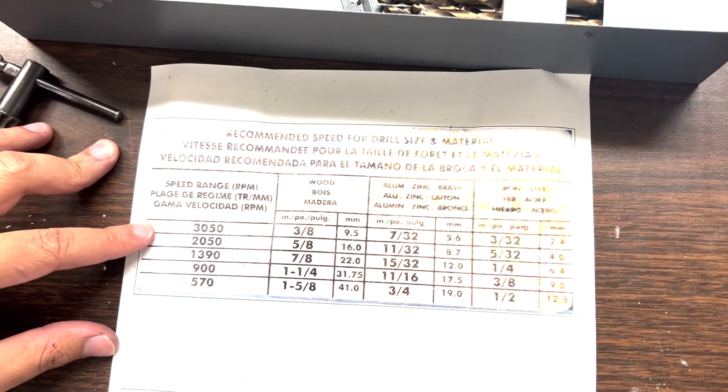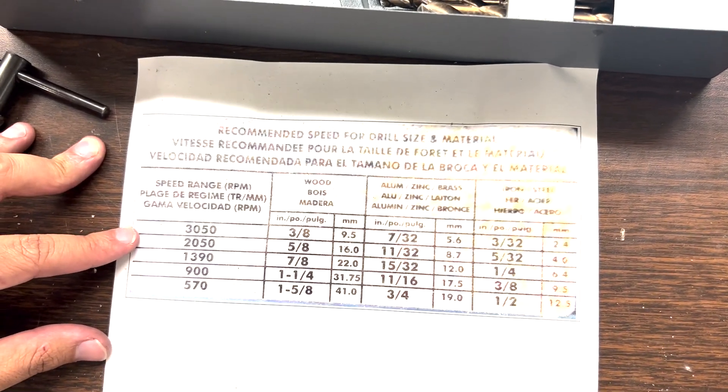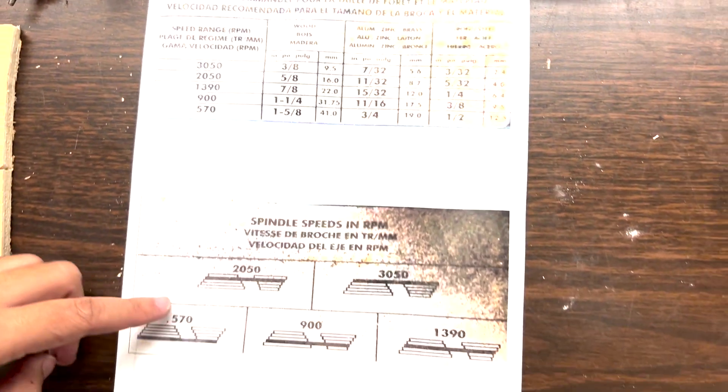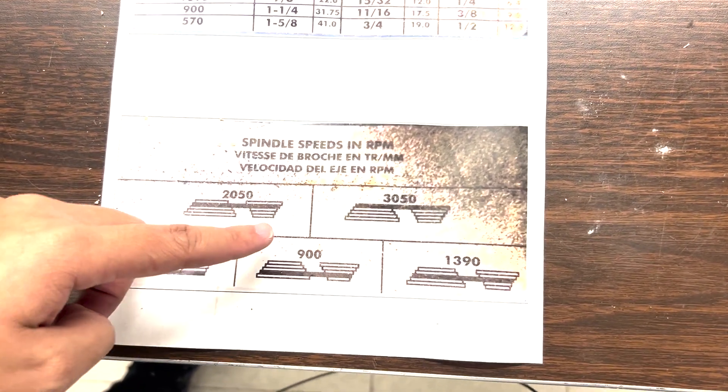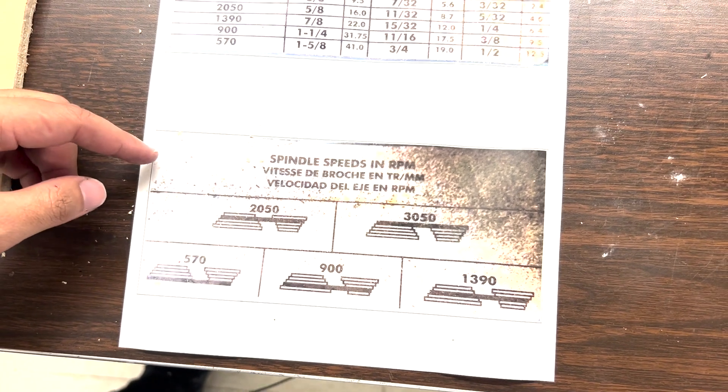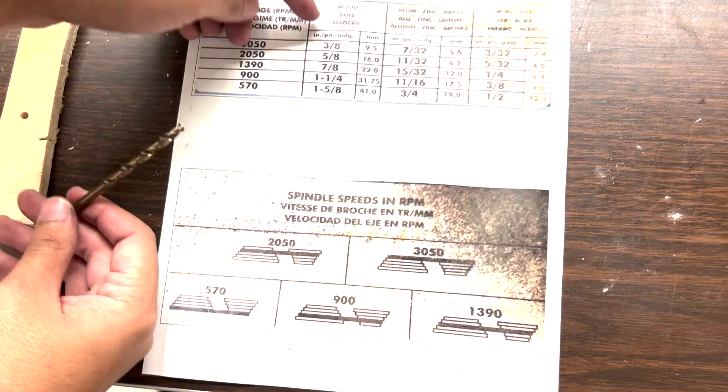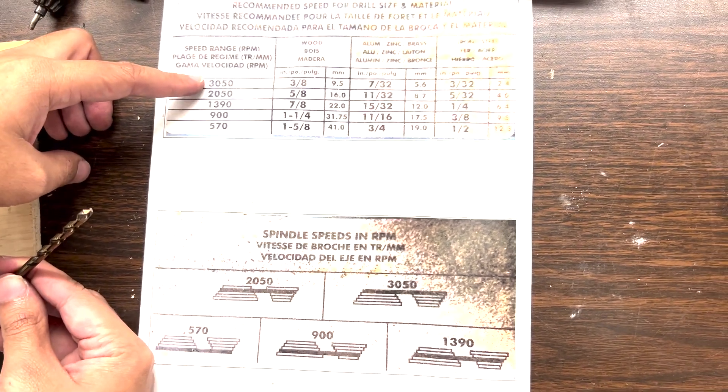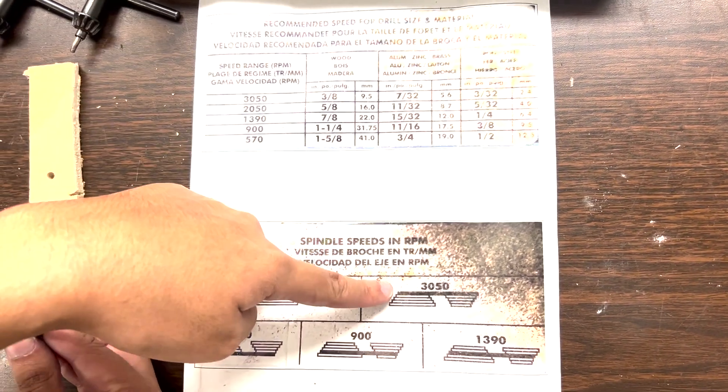You want to determine what RPM you're using to set the bench drill press to. Down here you can see how the pulley system would be for that specific RPM. Given that this is 3/16s, which is less than 3/8 here, you would be using 3050 RPM and you'll have to set it to this setting.